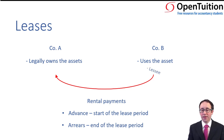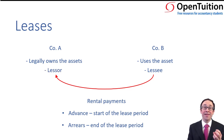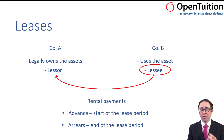More terminology: company B is referred to as the lessee. The lessee is the company that uses the asset, whereby the company that legally owns the asset is the lessor. What we're going to be focusing on is the lessee — at this level, we're focusing on the lessee's accounting in terms of looking at the rental payments and whether or not we actually recognise an asset within our financial statements.